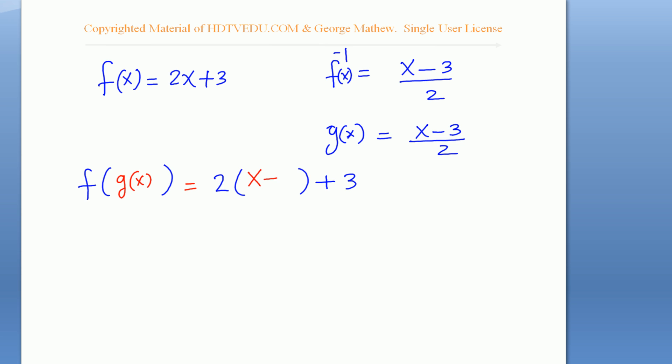Substituting g(x) = (x - 3)/2 into f: we get 2 · (x - 3)/2 + 3. The 2s cancel out, giving us x - 3 + 3, which is just x. So f(g(x)) = x.